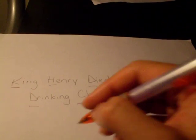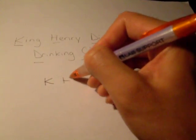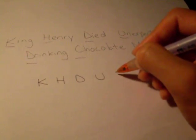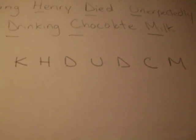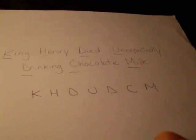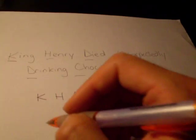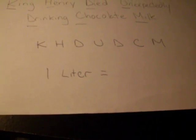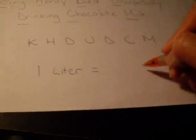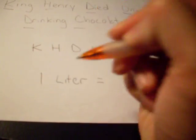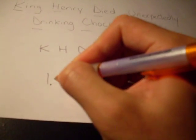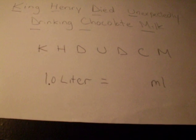So if you have a test, you can just remember this funny phrase — King Henry died unexpectedly drinking chocolate milk — and write the letters in order on your sheet. Let's convert one liter. We can pretend we have a decimal point in front of the one, so 1.0 liters is the same as one liter.